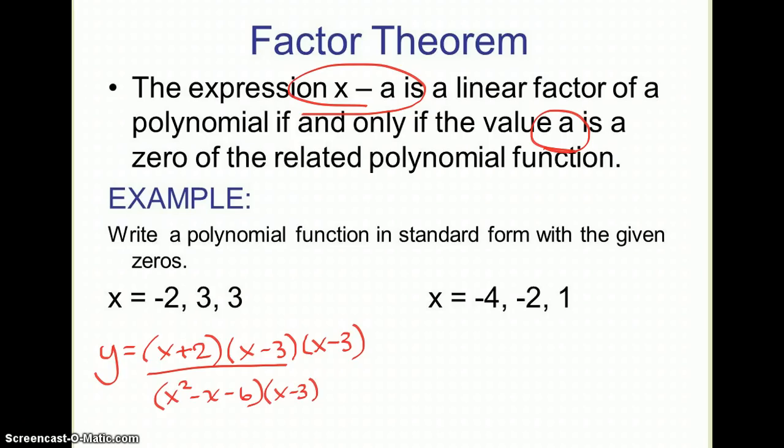And I want to multiply that times x minus three still. So then I do all my distributing here and I get x cubed minus three x squared minus x squared plus three x. I'm just doing my distributing. Minus six x plus eighteen.